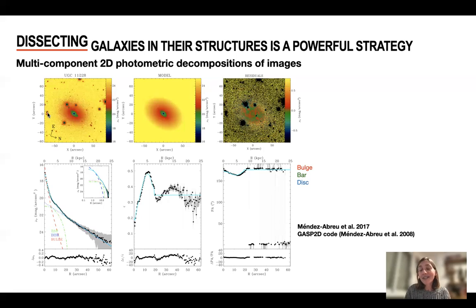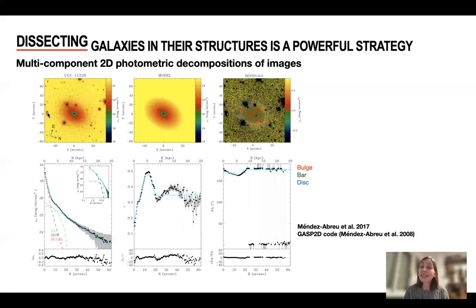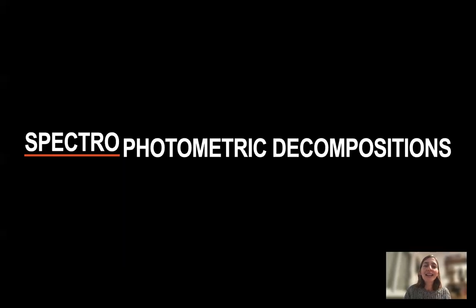But we are living in the era of integral field spectroscopic data. So the most ideal situation would be to have not only spatial information, but also spectroscopic information. Because this way we can study properties that are embedded in the spectra, like the stellar population properties.